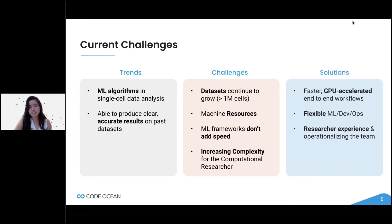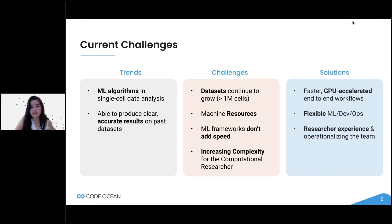One of the biggest challenges is that data sets are continuing to grow. Some data sets are reaching over 1 million cells, which clearly is pretty exponential from data set sizes in the past. Machine learning frameworks that are implemented for single cell genomics don't necessarily add speed. They produce efficient and clear results, but it's not going to increase any computational time, which a lot of the attendees here are experiencing — a lack of machine power.